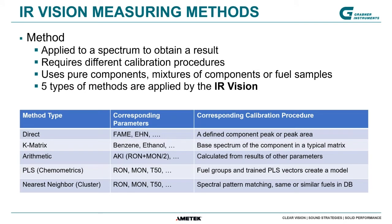Now, we have the spectrum — but how can you get to the corresponding parameters? To get to the parameters I've mentioned — concentrations, octane ratings, and so on — we apply five different types of methods in the IR Vision. We differentiate direct methods, K matrix, P matrix methods, then chemometrics with partial least squares, and cluster analysis or nearest neighbor search. The corresponding parameters are pure component concentrations for the direct or K matrix methods; arithmetic combinations for the arithmetic method; and property predictions for the PLS chemometrics method.